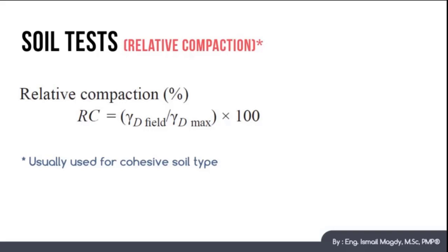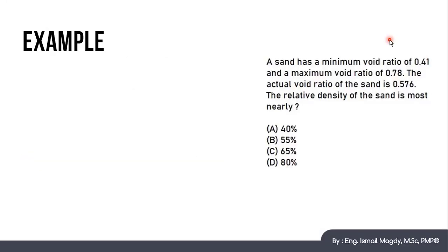So now, let's have an example on this. We have a sand with minimum void ratio of 0.41, and maximum void ratio of 0.78, the actual void ratio is 0.576, and we want to calculate the relative density of this sand.